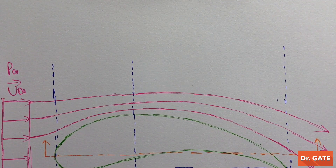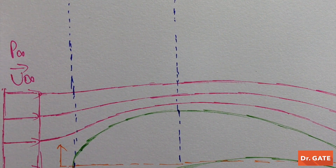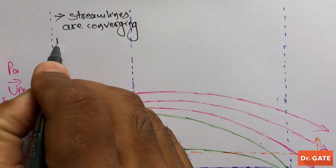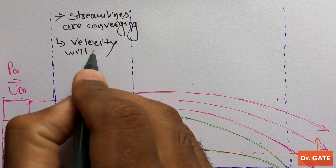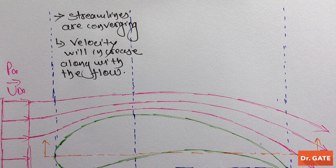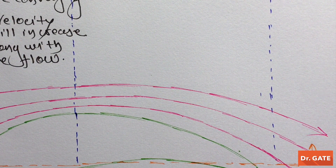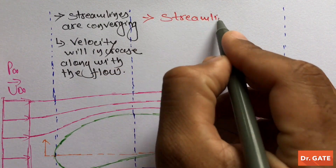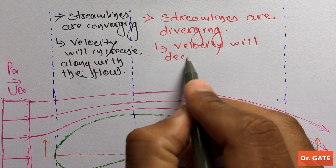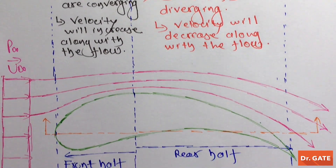From observing the flow pattern on the front half of the aerofoil, we can easily see that on the front half streamlines are converging, which means velocity will increase along with the flow. And on observing the flow pattern on the rear half of the aerofoil, one can easily see that on the rear half streamlines are diverging, which means velocity will decrease along with the flow.